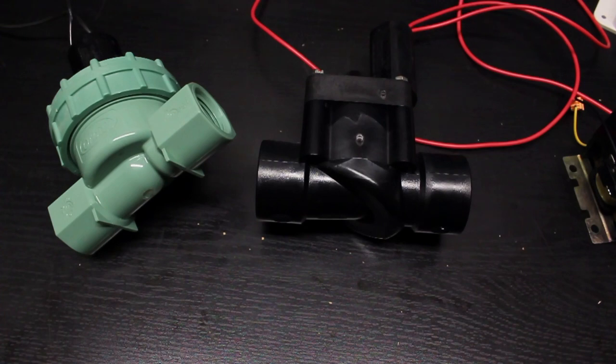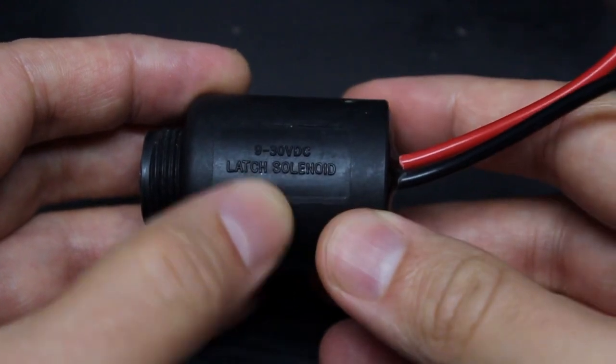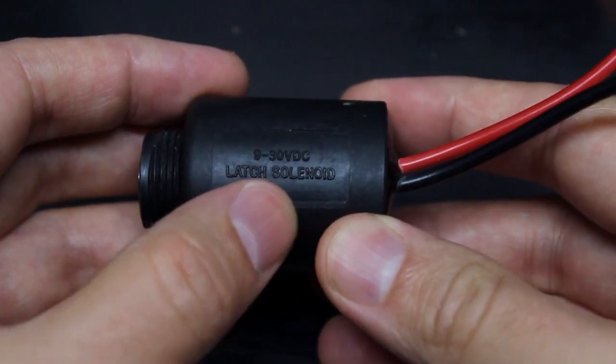There are several ways. One is to look at your existing sprinkler controller, find out its brand name and model number and check its user manual to see if it's a latching controller or not. Next, you can also look at the label on the valve which may say latching or latch solenoid.